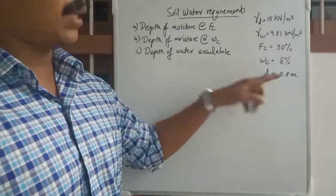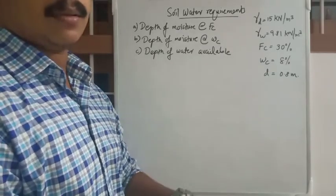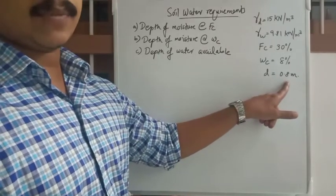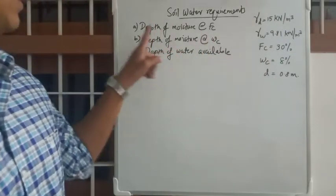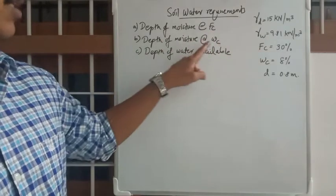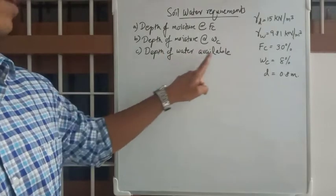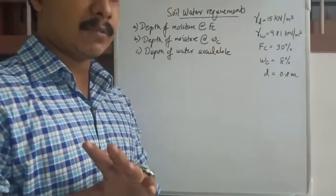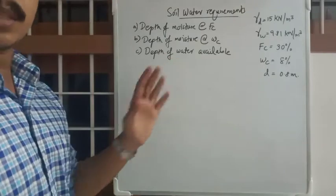The depth of root zone — the depth up to which roots reach into the soil from the surface — is d = 0.8 meters. Using these data, you have to find three things: depth of moisture at FC (field capacity), depth of moisture at WC (permanent wilting point), and depth of available moisture. Some equations were covered in the last video, so I'm jumping into the numerical problem.